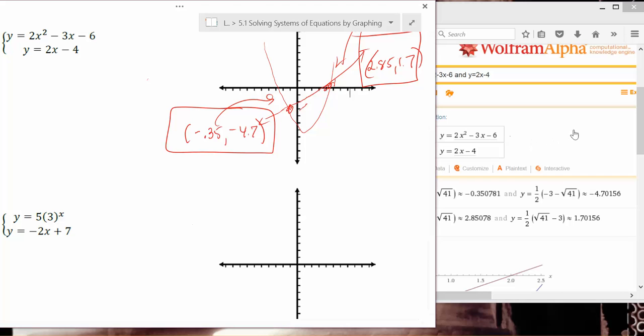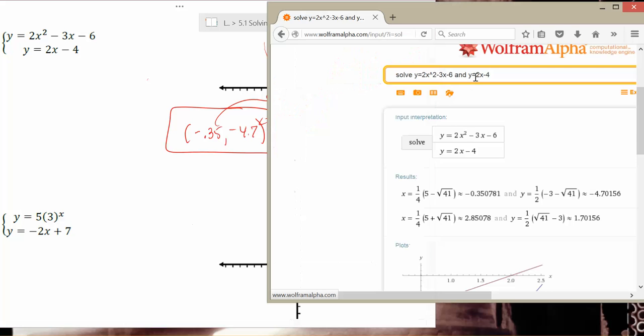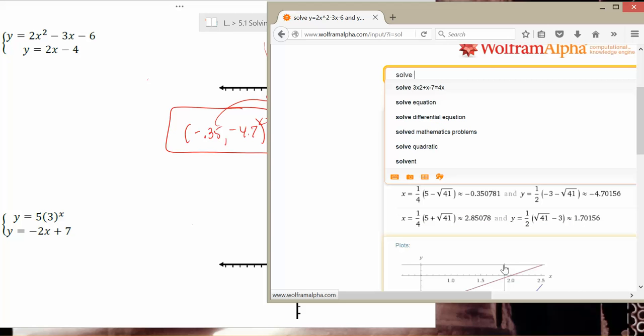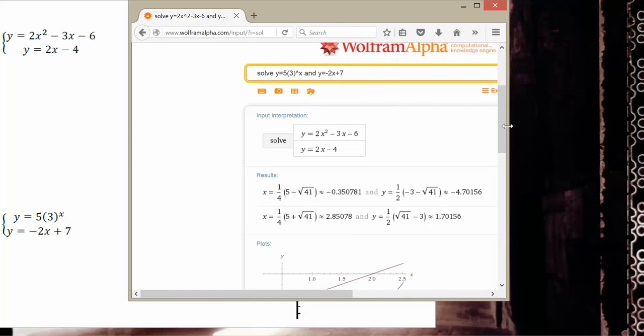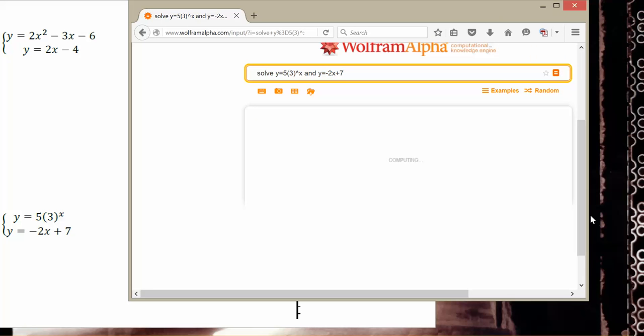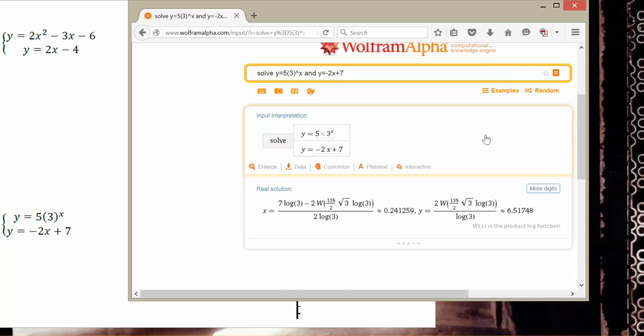Now, the nice thing about Wolfram Alpha and using technology is we can graph things that maybe we're not as familiar with in our class. We learned a little bit about exponential equations, but not really about the graphs that they create. However, we could still ask Wolfram Alpha to work on that for us. So, for example, here we could ask the computer to solve Y equals five times three to the X power. And again, if you use parentheses in your system, I kind of recommend that you use those again over here just to prevent any confusion. Over here, we also, for our second equation, Y equals negative two X plus seven. Let's pull this over here to do a little bit more magic. We'll hit the equals button. It does its thinking thing.